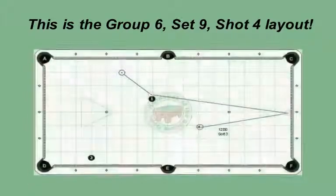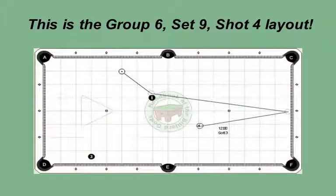This is the Group 6, Set 9, Shot 4 layout. Here's another situation where you have to make the cue ball travel a long distance to get shape on the next shot. To get anywhere near the comfort zone for the two ball, the cue ball has to travel all the way up table and back down.